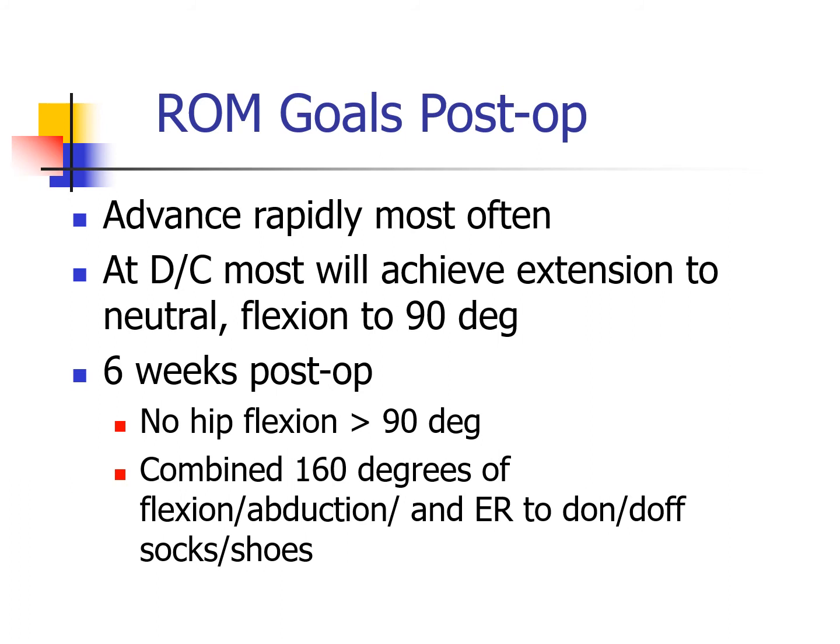Following total hip arthroplasty, patients do well with range of motion — much different from total knees where you struggle to regain motion. These individuals will largely recover mobility by the time they leave the hospital, achieving extension to neutral and flexion to 90 degrees. By six weeks post-op, we want to ensure we don't flex the hip beyond 90. Consider functional activities like putting on socks and shoes, which requires a combined 160 degrees of flexion, abduction, and external rotation — the FABER position. For patients with a posterolateral approach, these activities pose a potential risk for dislocation.